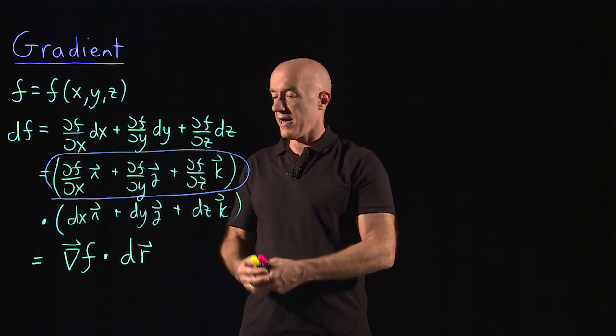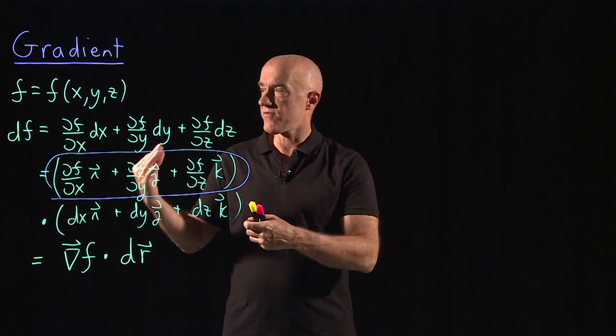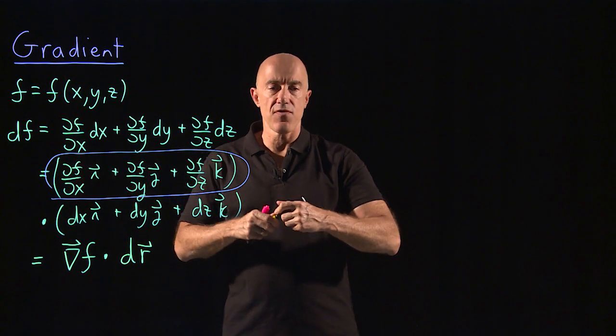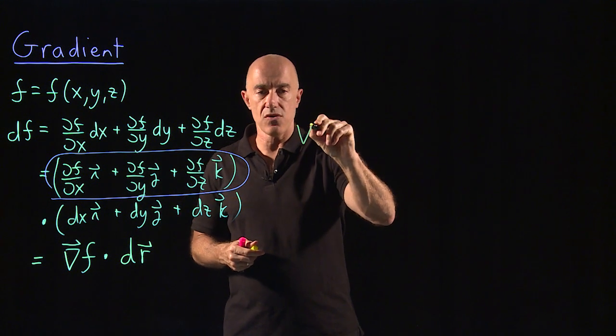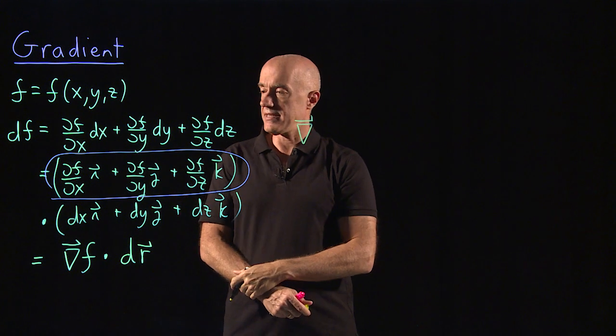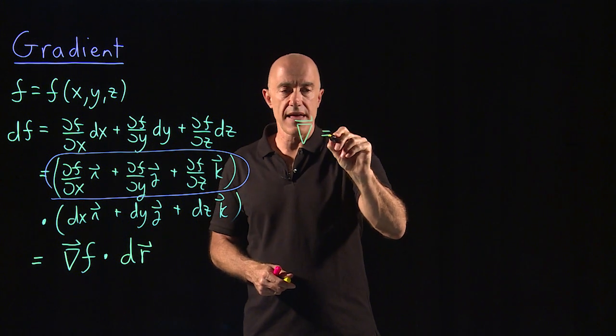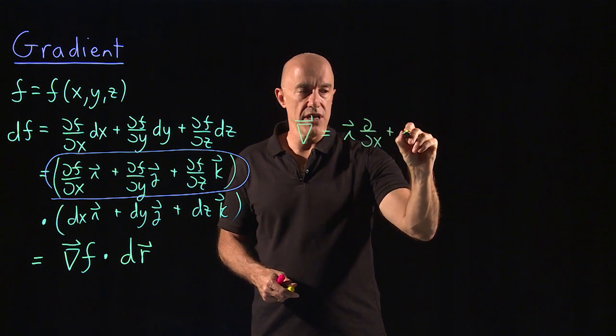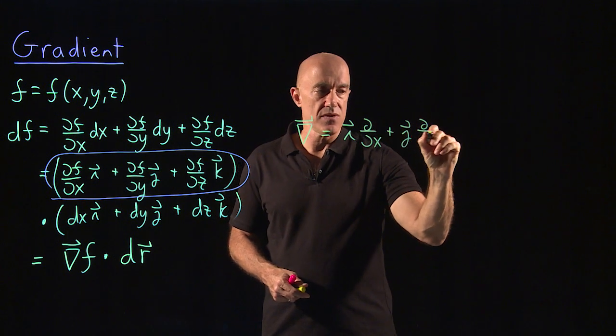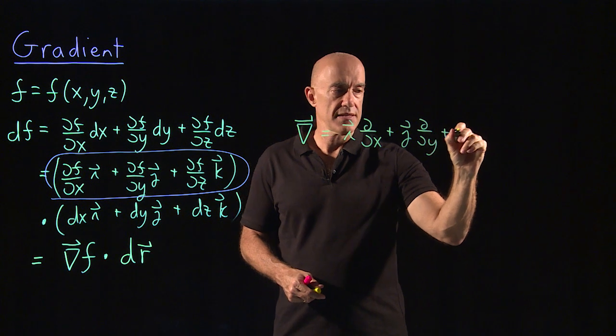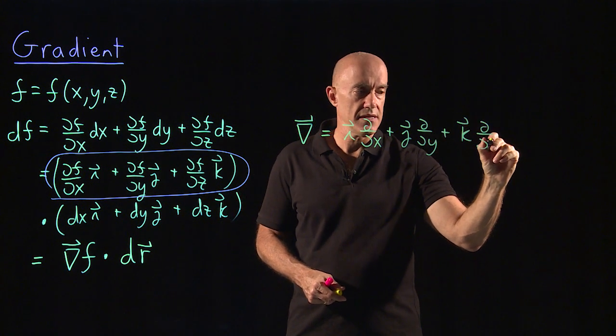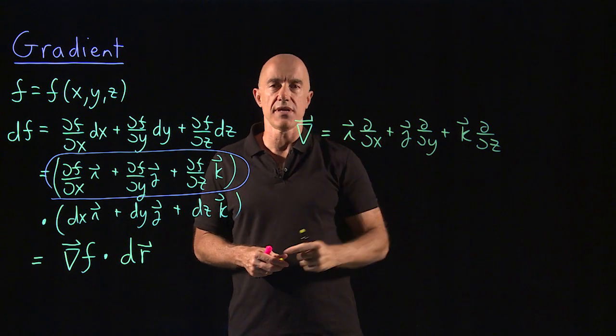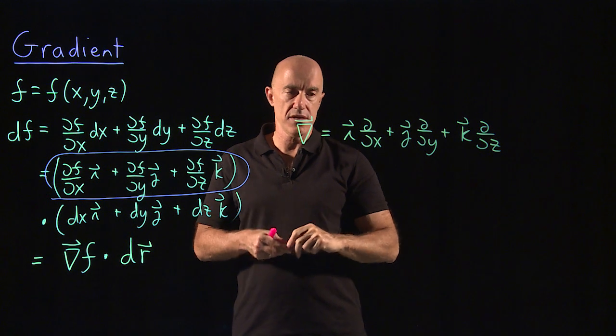Another way of writing the gradient is a formal notation. We write this ∇ all by itself as a differential operator. We can write that as i times d/dx plus j times d/dy plus k times d/dz. That's maybe something you never saw before, this is called a differential operator.